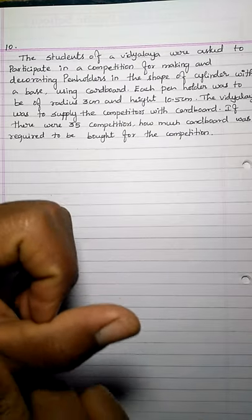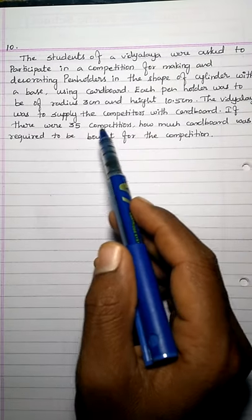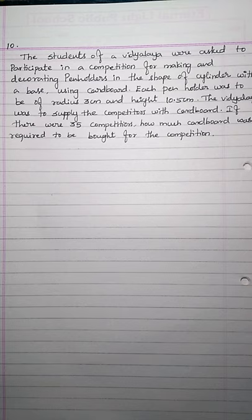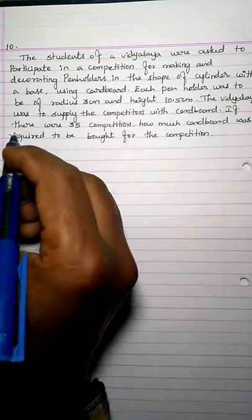The students of Vidyalaya were asked to participate in a competition for making and decorating pen holders in the shape of a cylinder with a base. Each pen holder was to have a radius of 3 cm and a height of 10.5 cm. The Vidyalaya was to supply competitors with cardboard. If there were 35 competitors, how much cardboard was required to be bought for the competition?